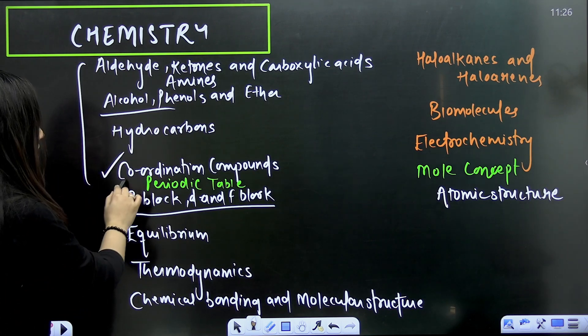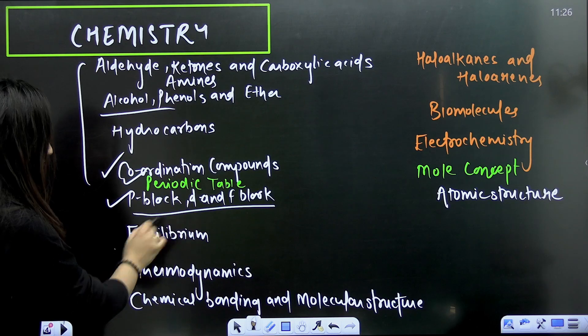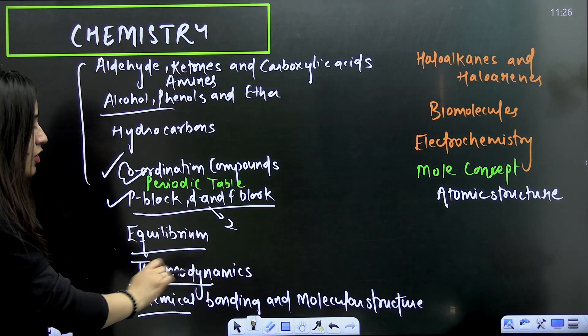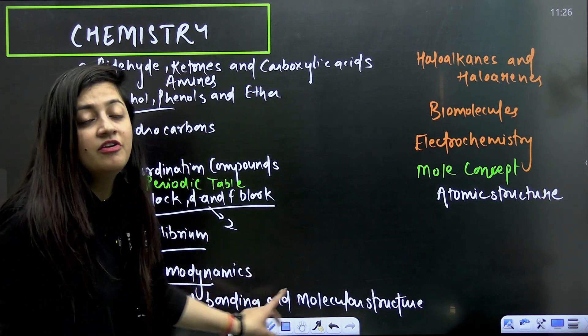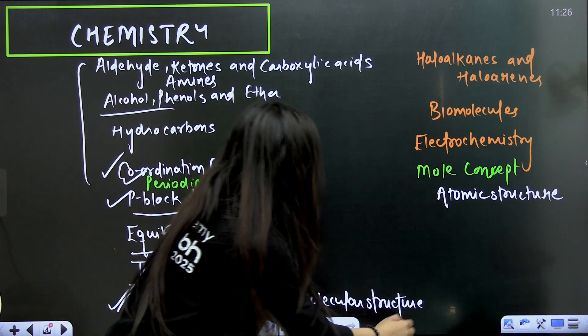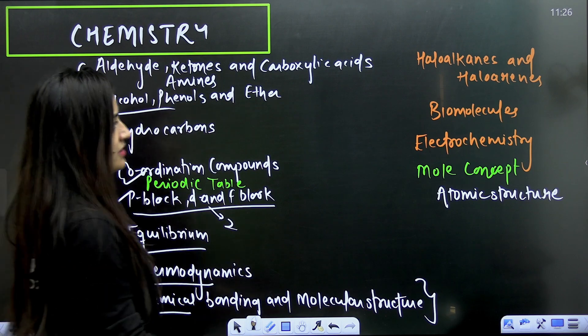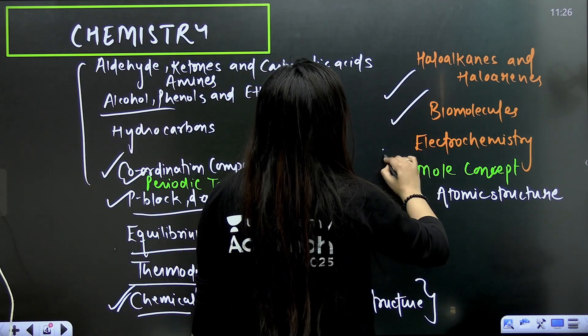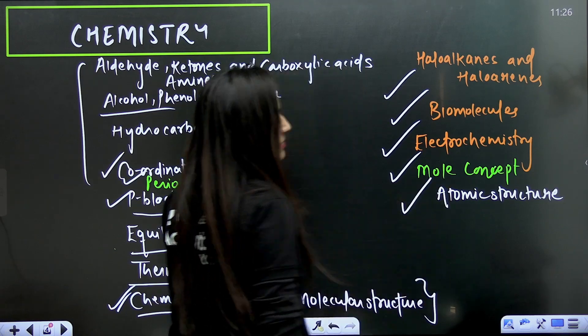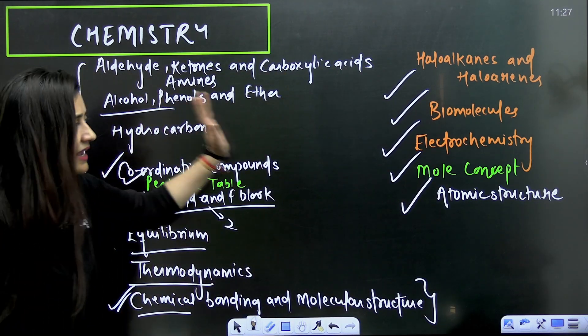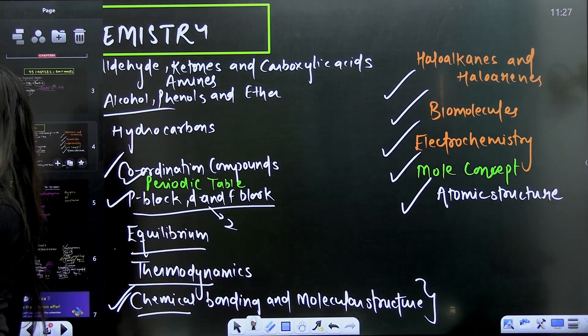Hydrocarbons, coordination compound, periodic table, P block, D and F block. From D and F block again two questions can come. Equilibrium, thermodynamics, chemical bonding and molecular structure. It is very important even for understanding chemistry. So I will suggest you people to start from this particular chapter. Then haloalkanes, haloarines, biomolecules, electrochemistry, mole concept, atomic structure. This is the list. Please take the screenshot. If you have difficulty in any chapter, you can watch our channel.